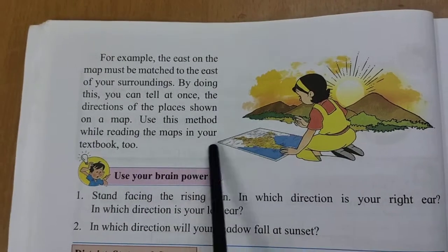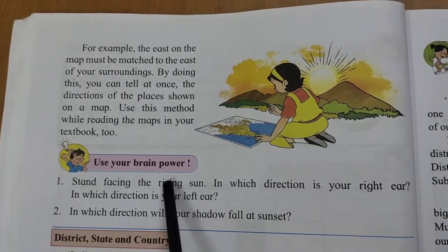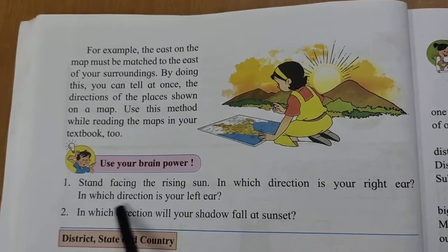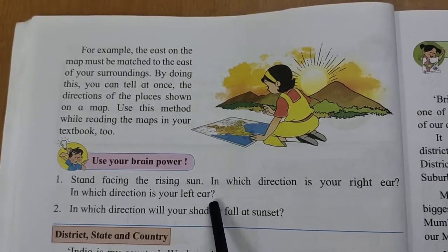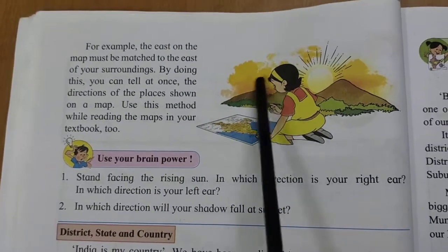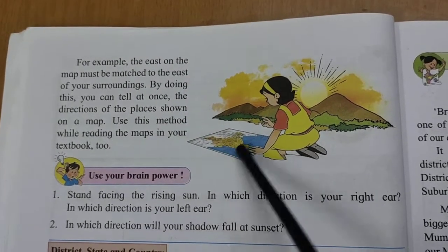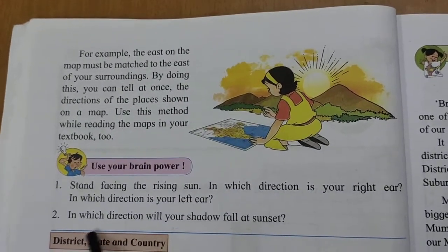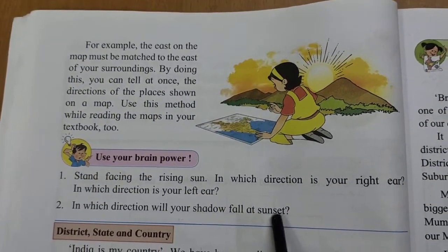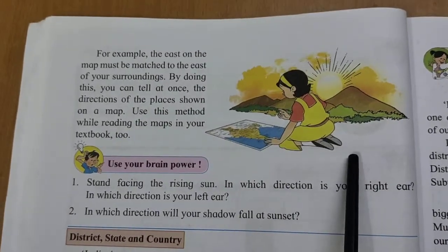Stand facing the rising sun. When you face the rising sun, you are facing East. In which direction is your right ear? In which direction is your left ear? When you face East, your right ear will be South and your left ear will be North. In which direction will the shadow fall at sunset? Sunset is in the West, so the shadow falls toward the East — behind you.